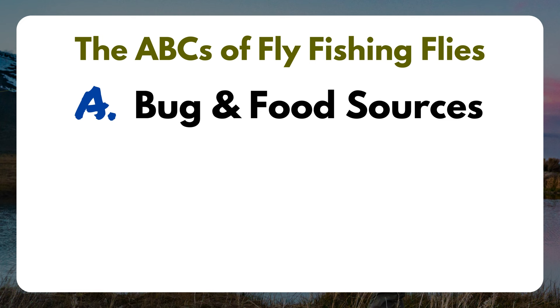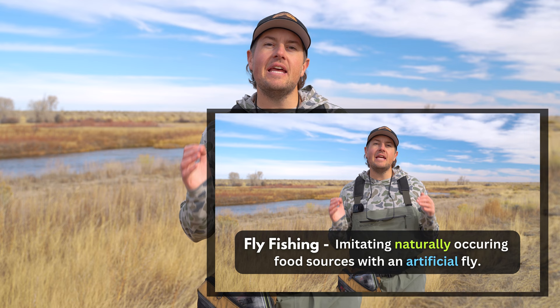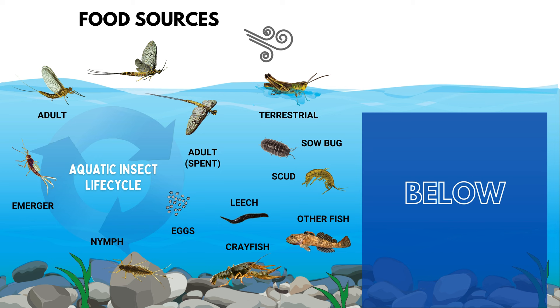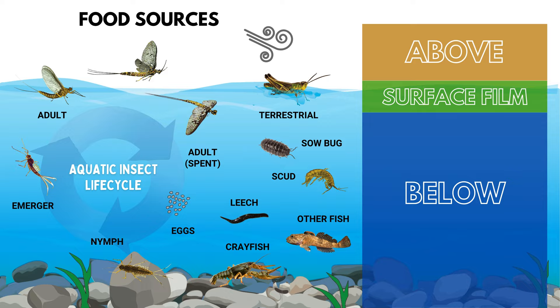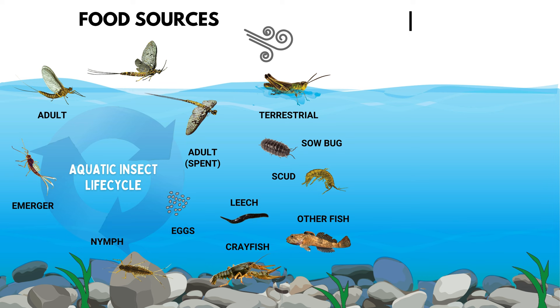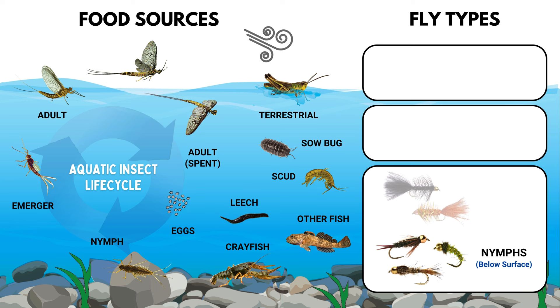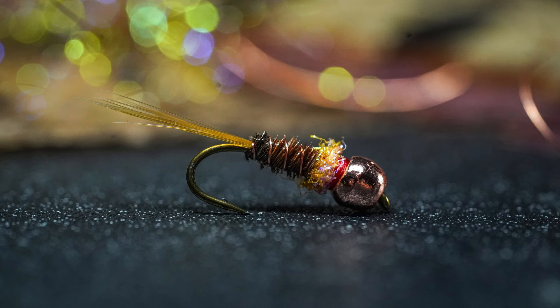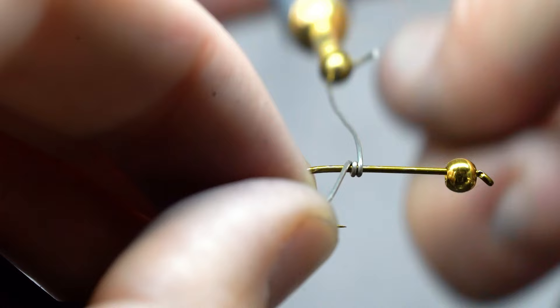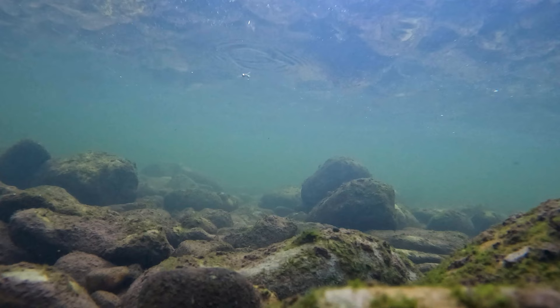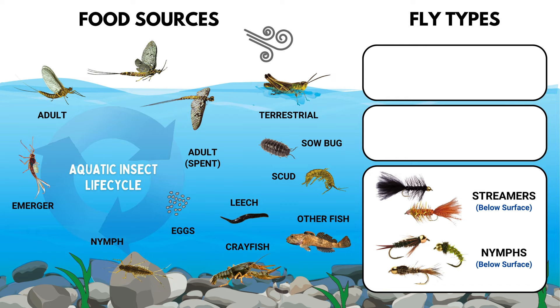Now it's time to move on to the B of our ABCs, which is fly types. In fly fishing, we're imitating naturally occurring food sources with an artificial fly. Some food sources are below the water surface, some are close to the top, and some are riding on top. To cover all our bases, we've got four different fly types. For bugs below the surface, we use nymphs and streamers. Nymphs imitate bugs in the larval or nymphal stages — the baby bugs. Streamers imitate bigger meals like other fish, leeches, and crayfish, and often have a tungsten or brass bead to sink faster. We imitate bugs traveling to the surface with emergers.